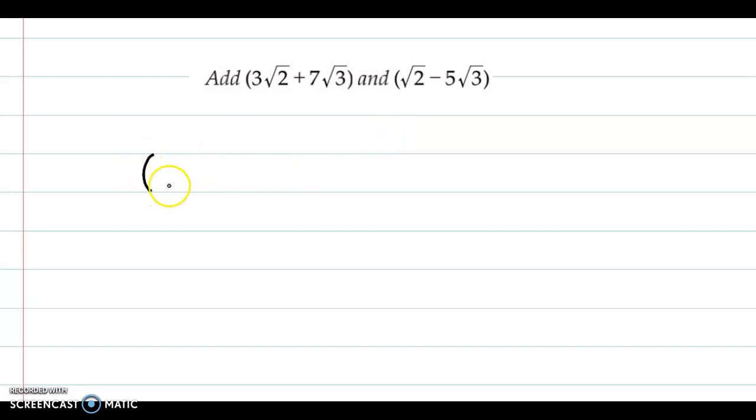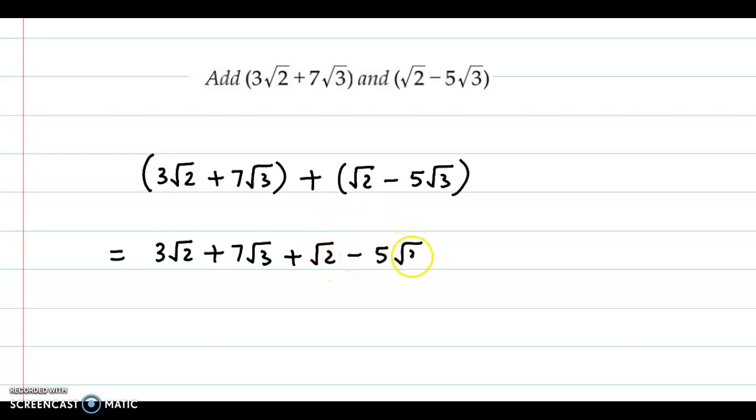So let us perform the addition. We have (3√2 + 7√3) + (√2 - 5√3). Opening up the brackets, we get 3√2 + 7√3 + √2 - 5√3.